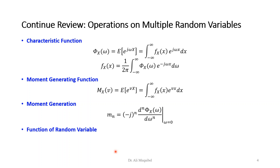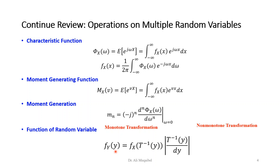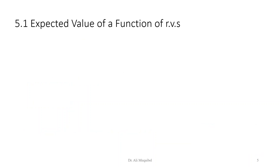We looked at functions of random variables — basically if you have a transformation, whether this transformation is monotonic or non-monotonic. Given the original PDF you get the transformed PDF; for the case of non-monotonic we have a summation there.